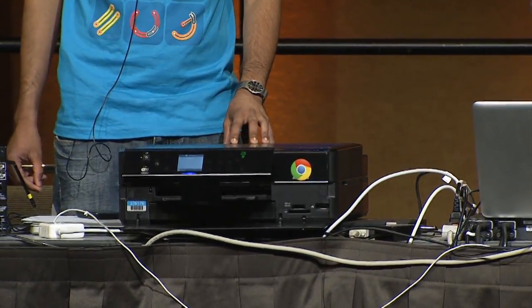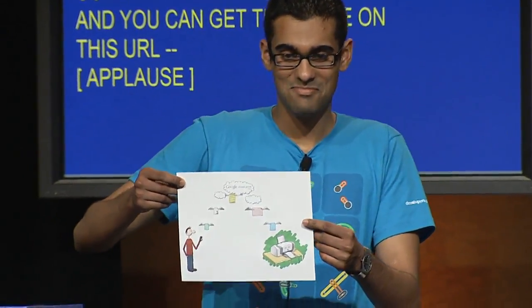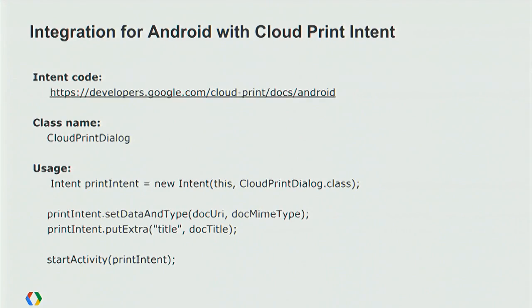It's super easy on the web to integrate with Cloud Print, and it's even easier to integrate an Android application. In order to do that, you include the Cloud Print intent code into your application — you can get this code from a URL. On Android, all you need to do is add a Cloud Print intent into your app. The intent class name is CloudPrintDialog. All you need to do is instantiate the intent, set the data and type of the document you want to print, set the title of the document, and start the intent. Since it's so simple, let me show you how to do it in a real application.